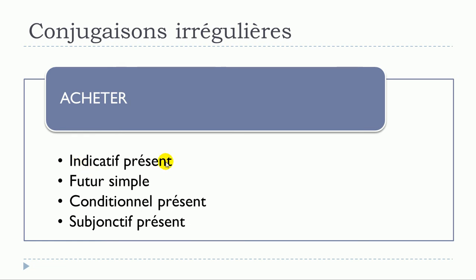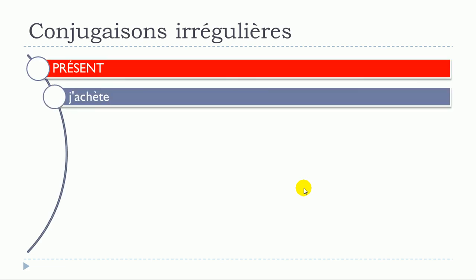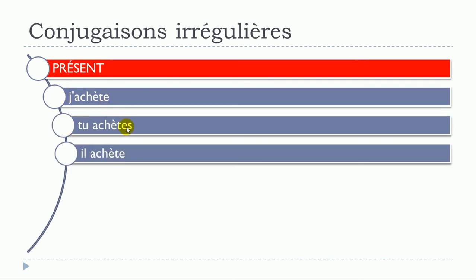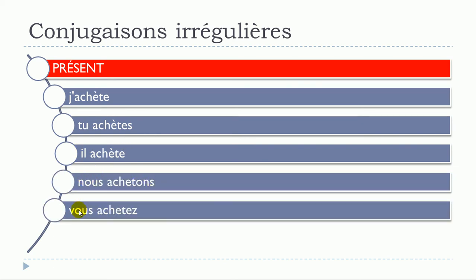For the Indicatif Présent, Futur Simple, Conditionnel Présent, and Subjonctif Présent, it will be slightly different. For all the other tenses, the verb will follow the regular rule. Now let's see the present form: j'achète, tu achètes, il achète, nous achetons, vous achetez, ils achètent.